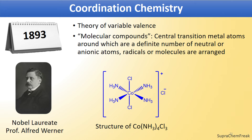In 1893, another breakthrough and the beginning of a new field called coordination chemistry was established by Nobel laureate Professor Alfred Werner. Astonished by molecular compounds, Werner proposed that these are compounds composed of central transition metal atoms around which a definite number of neutral or anionic atoms, radicals, or molecules are arranged. He established the theory of variable valence.